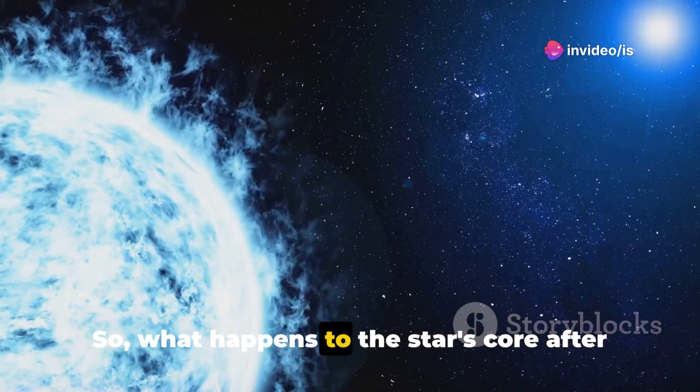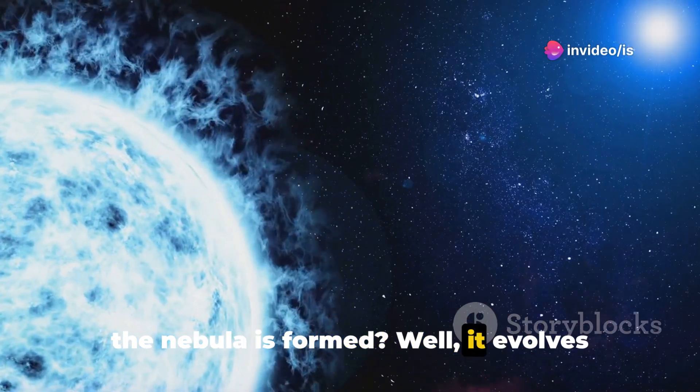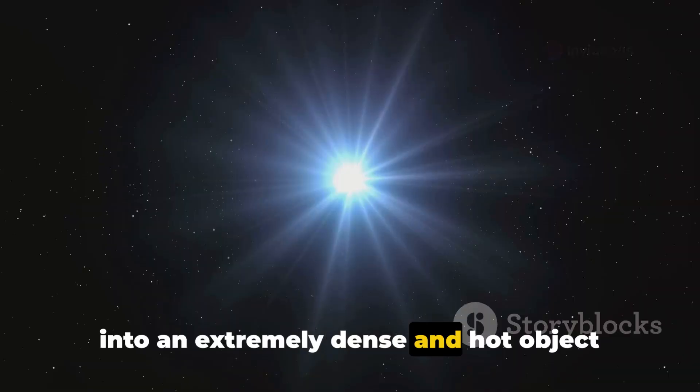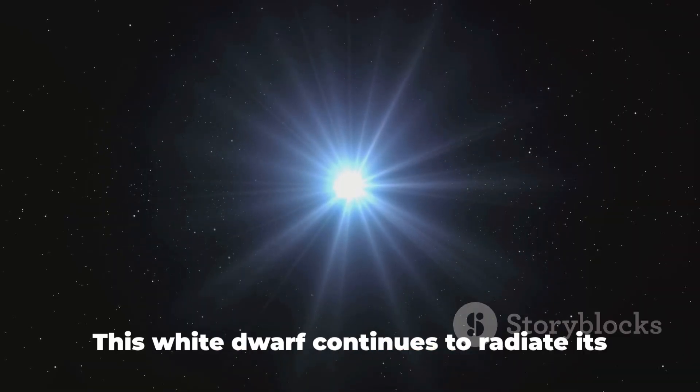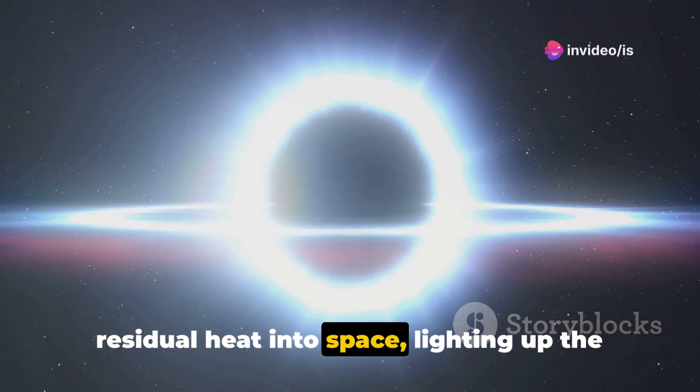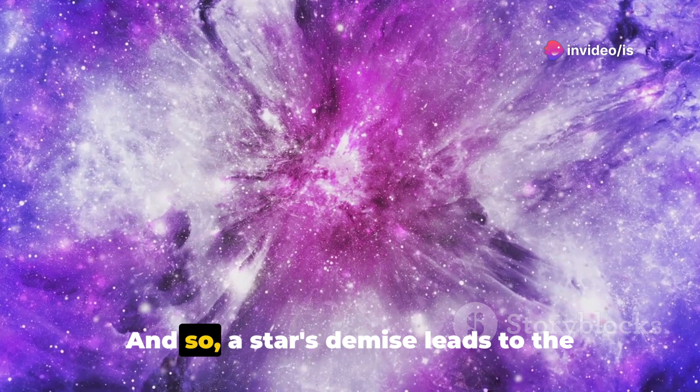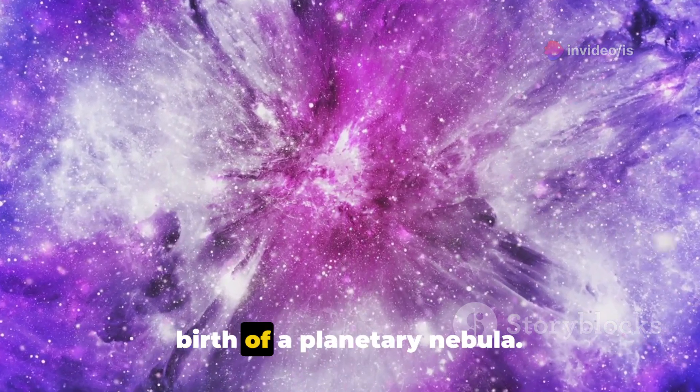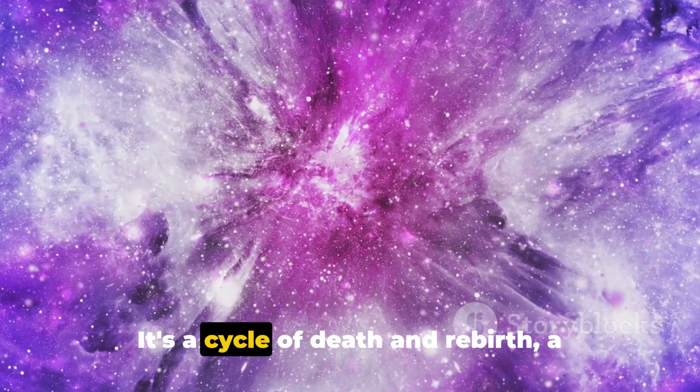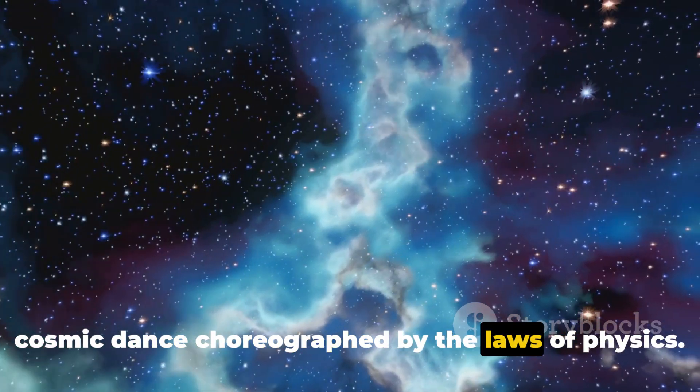So what happens to the star's core after the nebula is formed? It evolves into an extremely dense and hot object known as a white dwarf. This white dwarf continues to radiate its residual heat into space, lighting up the nebula for tens of thousands of years. And so, a star's demise leads to the birth of a planetary nebula. It's a cycle of death and rebirth, a cosmic dance choreographed by the laws of physics.